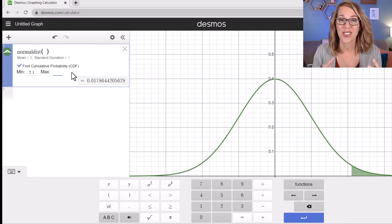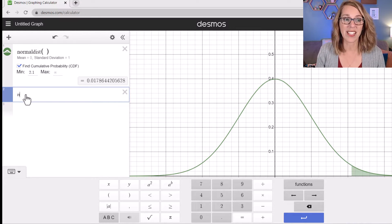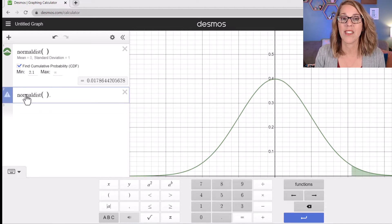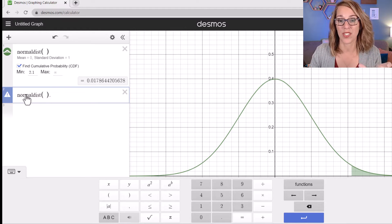But we can also go backwards. We can give Desmos an area and it will give us back the Z score. I'm going to go ahead and grab another empty cell. And I'm going to again, type in normal dist parenthesis. If I hit parenthesis and then the period, I can add on here an inverse function.